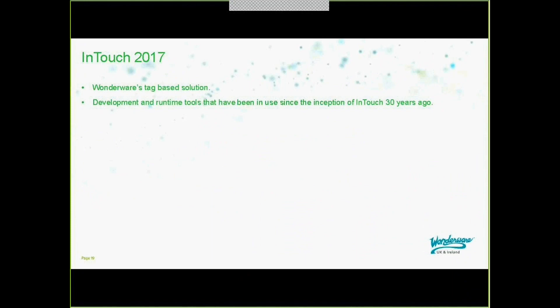There are different types of InTouch applications that can be created: classic, modern, and managed. The classic application uses the familiar WindowMaker and WindowViewer tools with raster-based graphics. A modern InTouch application uses the same tools but incorporates some of the Orchestra technology, allowing vector-based graphics and templated graphic design. Modern InTouch applications are published and managed the same way as classic applications. For distributed applications, the NAD (network application development) functionality is used, or a manual copy process is required.